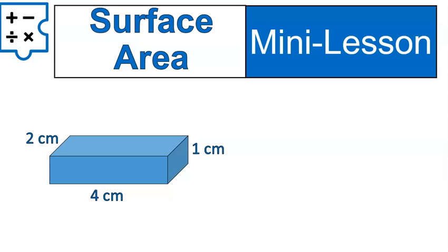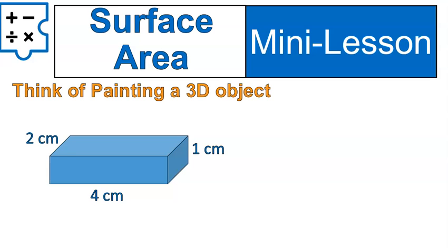Surface area is when you think about painting a three-dimensional object. So if we had this block here that's one centimeter by two centimeters by four centimeters, and you wanted to paint the entire outside of that block, that's what we're looking for with surface area — how much paint would it take to cover the outside of it? Or how much wrapping paper would it take to cover it? Those are the types of things when we're talking about surface area.